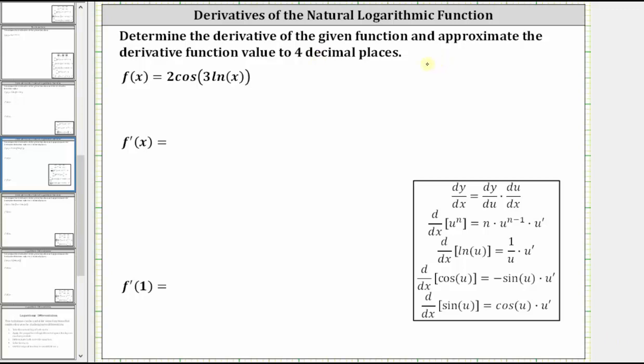We're asked to find the derivative of the given function and then approximate the derivative function value to four decimal places. We are given f(x) equals two cosine of three natural log x.